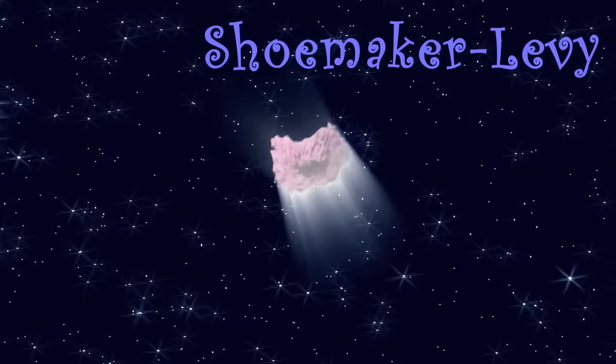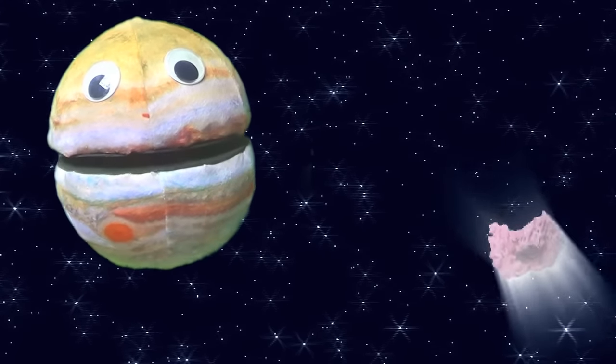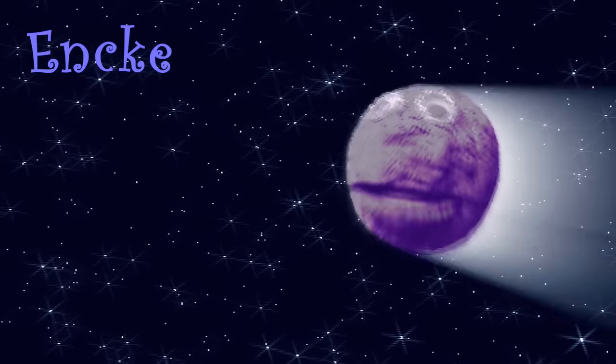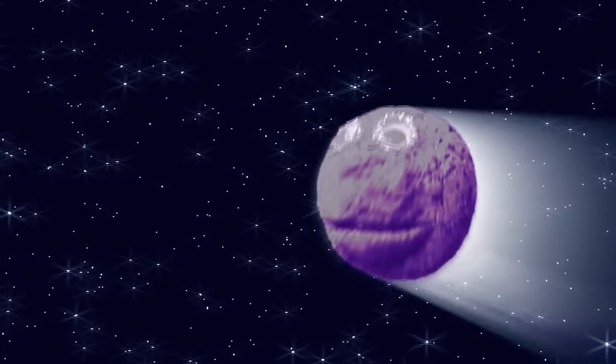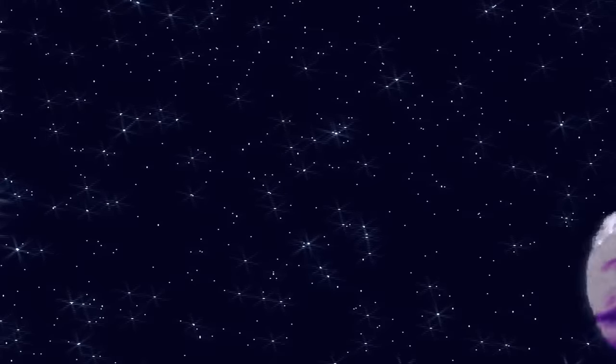I'm Shoemaker-Levy, or all that's left over. Most of me crashed on Jupiter in 1994. When I passed Jupiter, I got caught in his gravity and collided with him, which broke me up totally. My name is Enki, and I am reliable. A periodic comet that orbits every three years or so. I passed Earth recently, but don't worry if you missed it. My orbital period's short, so I'll be back soon to visit.